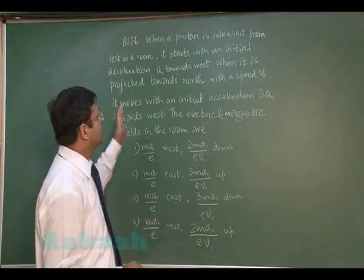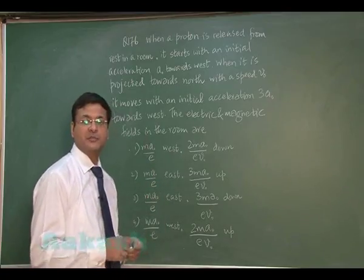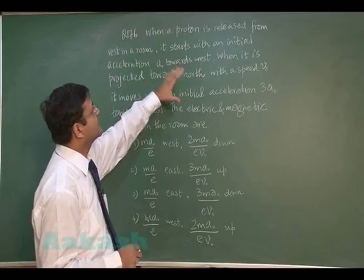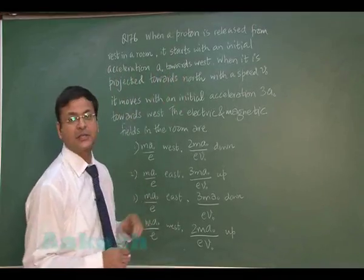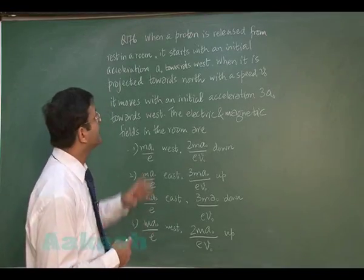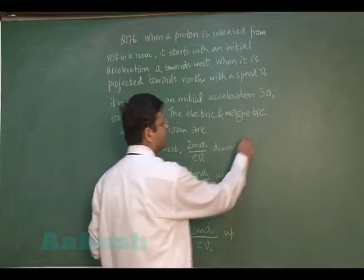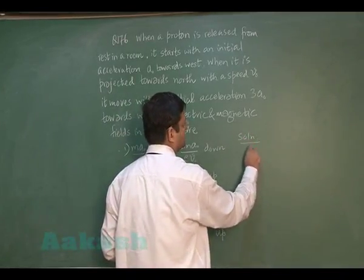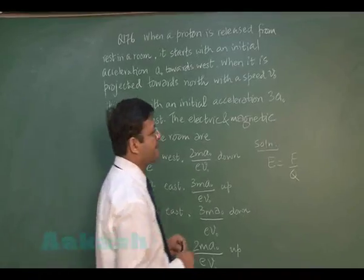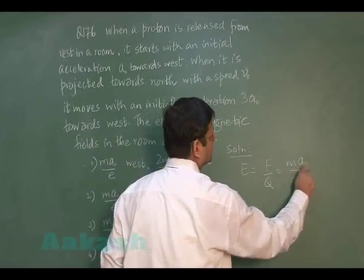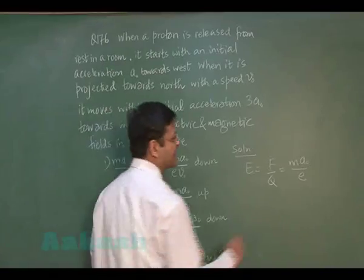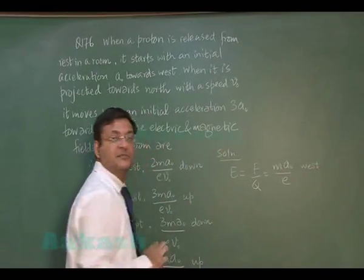Question 176 is based on the motion of a charged particle in combined electric and magnetic fields. When a proton is released from rest it starts with an initial acceleration a₀ towards west. Since it accelerates from rest, an electric field must exist. The electric field E = F/q = ma₀/q, directed towards west.